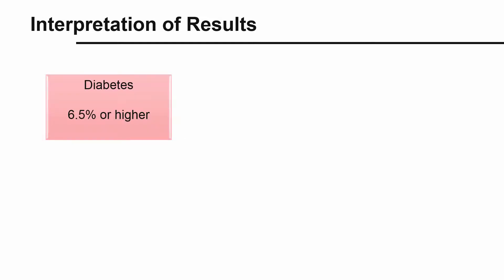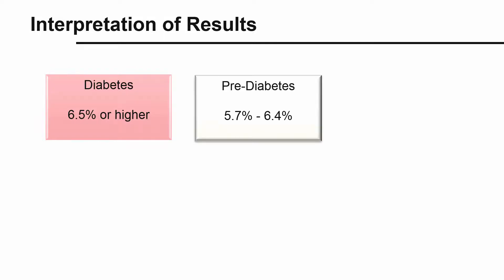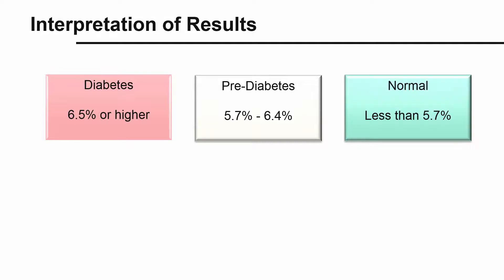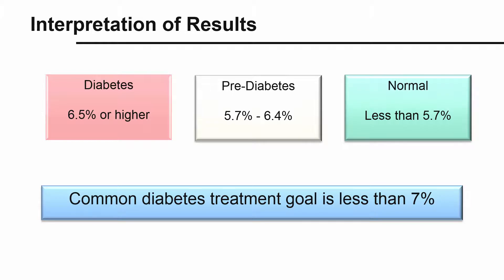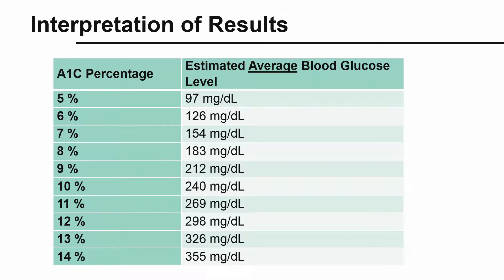According to the American Diabetes Association, an A1c percentage of 6.5% or higher indicates diabetes. 5.7 to 6.4% indicates prediabetes. Normal levels are below 5.7%. A common treatment goal for diabetes is less than 7%, but your healthcare provider will provide an appropriate goal for you. This chart displays how the A1c percentage corresponds to an estimated average blood glucose level.